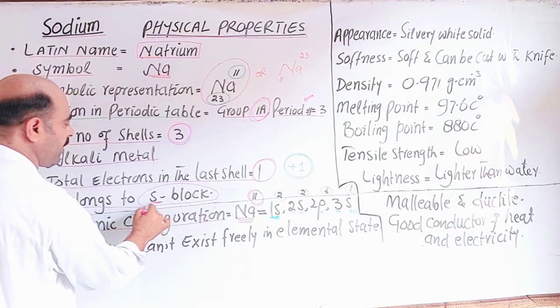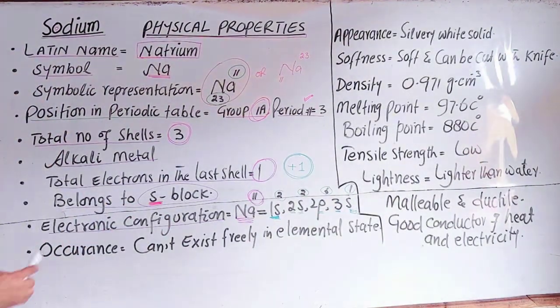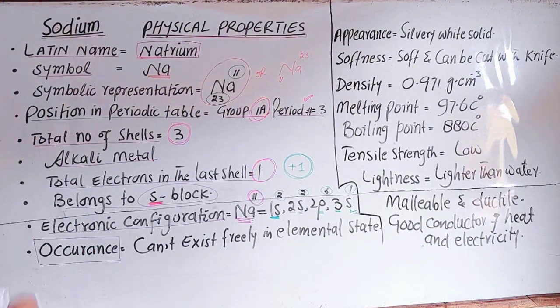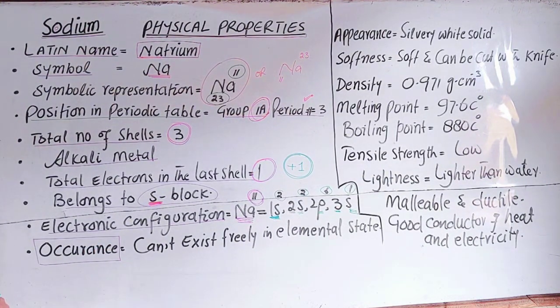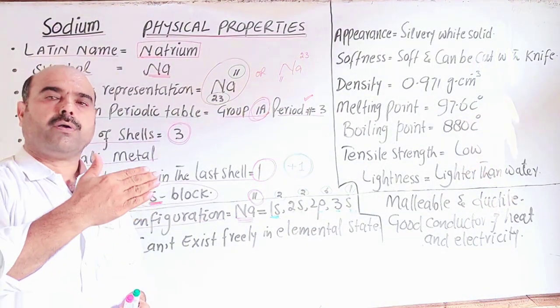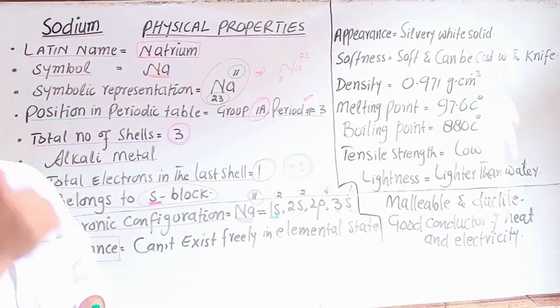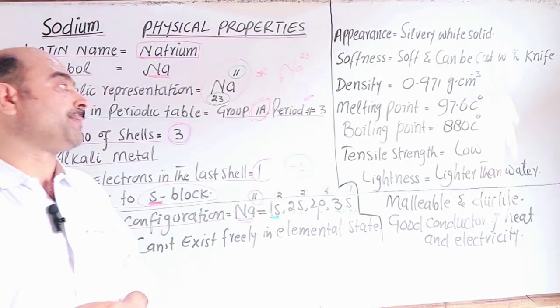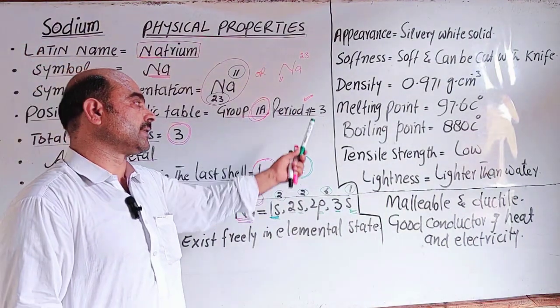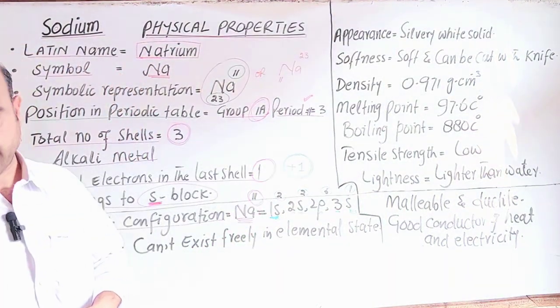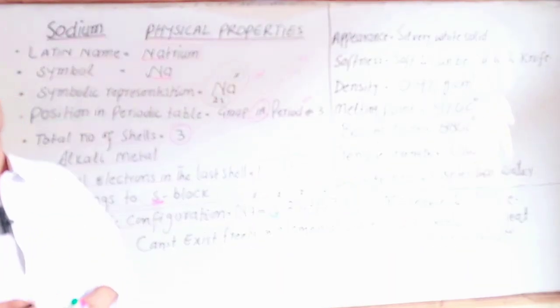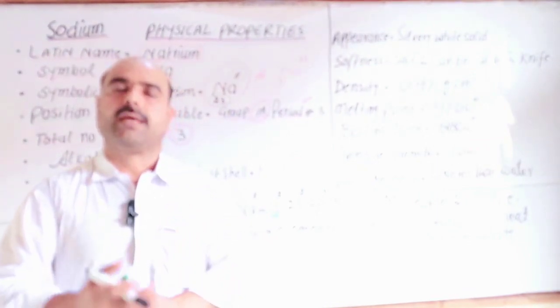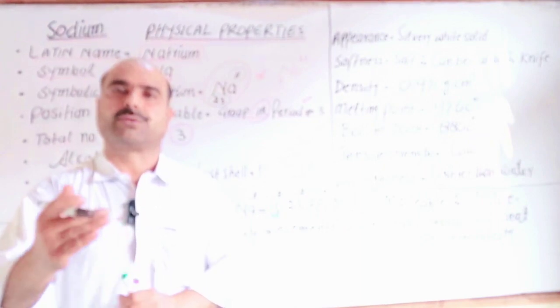It is an s-block element. The occurrence in nature: it is in the third period. Its size is large. The outermost electron experiences less attractive force. The ionization energy is low, so it easily loses electrons. This means high electropositivity and more reactivity.